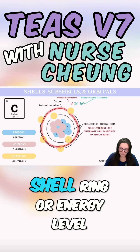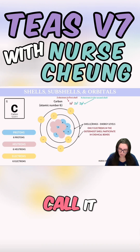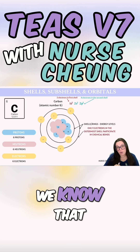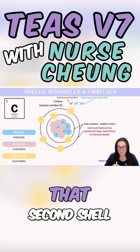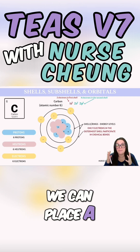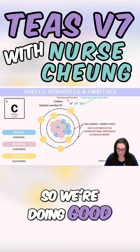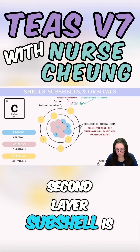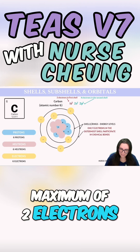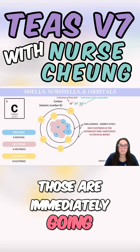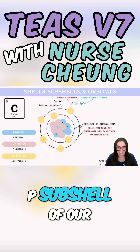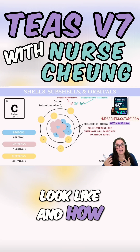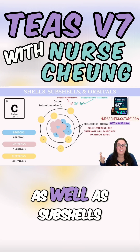With our second shell, ring, or energy level, we have an additional four electrons to place. We know the second shell can hold a maximum of eight electrons. The S subshell of our second layer will hold a maximum of two electrons, and then the remaining two will go into the P subshell of that energy level. This is what a carbon atom looks like in terms of its shells and subshells.